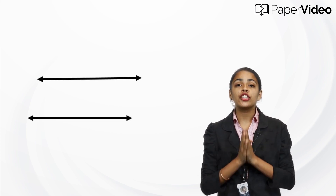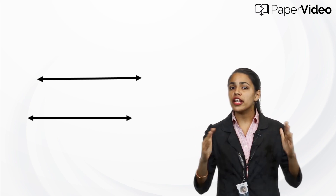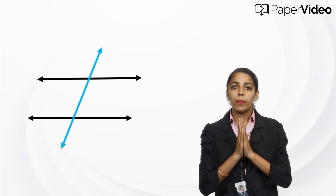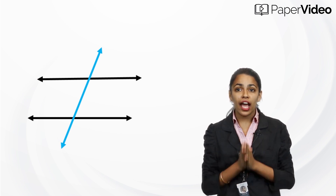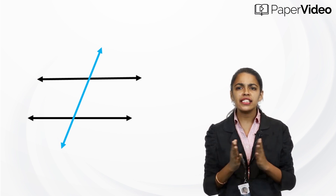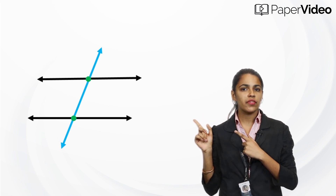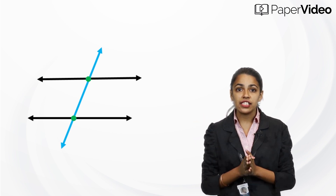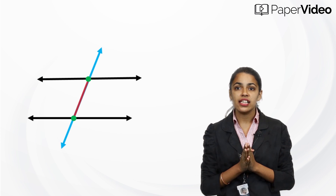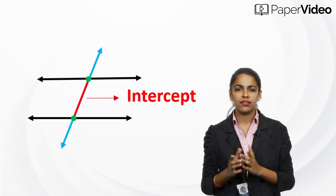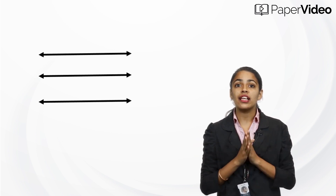Parallel lines are two lines which never intersect with each other. A transversal of a pair of parallel lines is a line which intersects these lines in two distinct points. In such a case, we call this length the intercept made on the transversal.